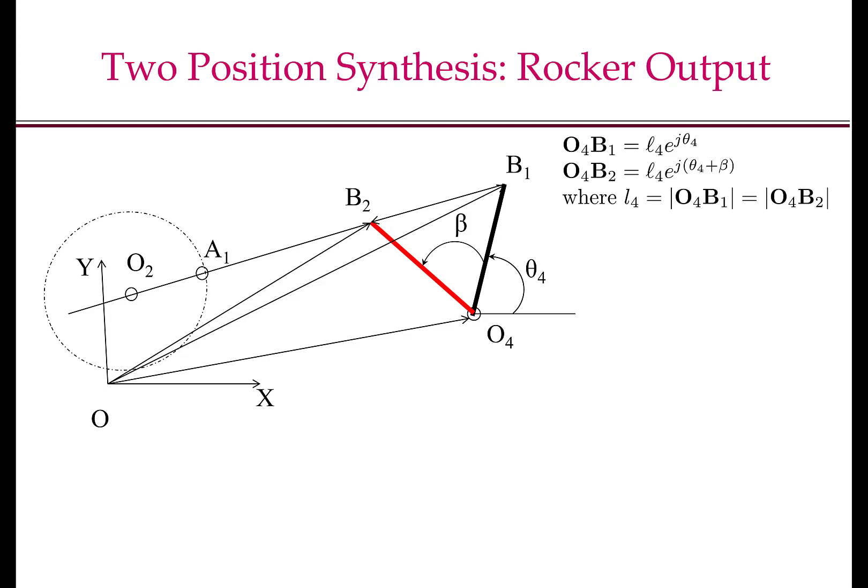Let L4 be the length of the follower link or the rocker. Since we know this length L4 and we know the angle theta 4, we know O4B1 is L4e to the power of j theta 4. O4B1 is the vector with its root at O4 and its head at B1. Similarly, O4B2 is L4e to the power of j theta 4 plus beta. Theta 4 plus beta is the angle made with the x-axis. The vector OB1 is OO4 plus O4B1. The vector OB2 is OO4 plus O4B2. Recall that I have assumed O4 is known. So this vector length R and this angle phi is known. Now, B1B2 is OB2 minus OB1.